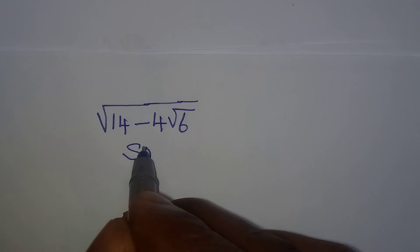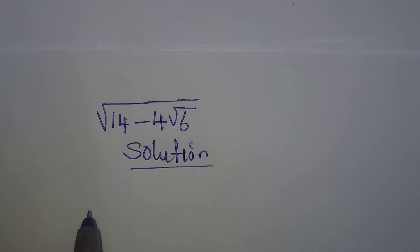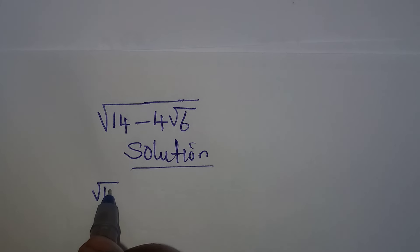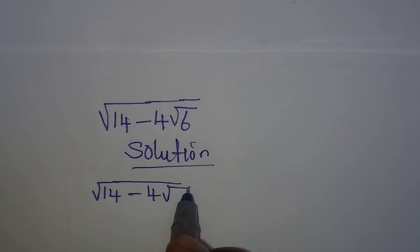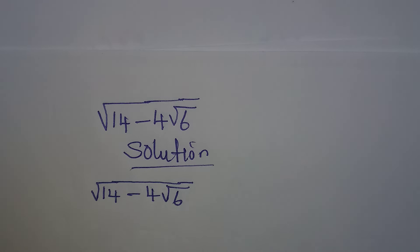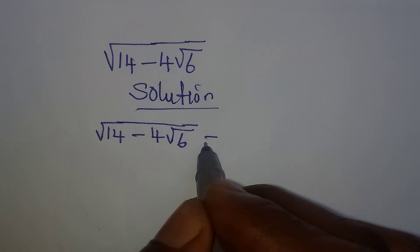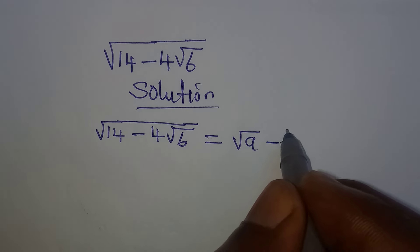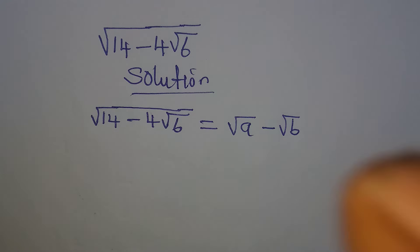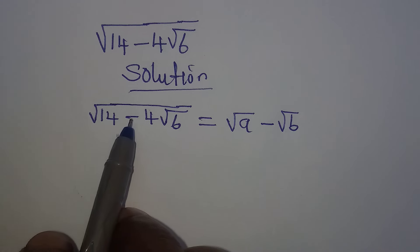Hello everyone. Let's find the square root of what we have here very quickly. We have to find the square root of 14 minus 4√6. Now this is not that difficult. What we would do is let's say the square root of the whole of this equals square root of a minus square root of b. So once we have the values of a and b, then we know the square root of this already.